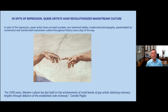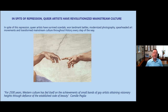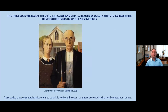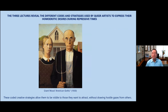I love this quote from author Camille Paglia: 'For 2,500 years, Western culture has fed itself on the achievements of small bands of gay artists, attaining visionary heights through defiance of the established code of beauty.' My three lectures are going to reveal to you the different codes and strategies that were used by queer artists to express their homoerotic desires during repressive times. These strategies allowed the queer artist to be visible only to those they wanted to attract, without drawing hostile gazes from non-gay people.